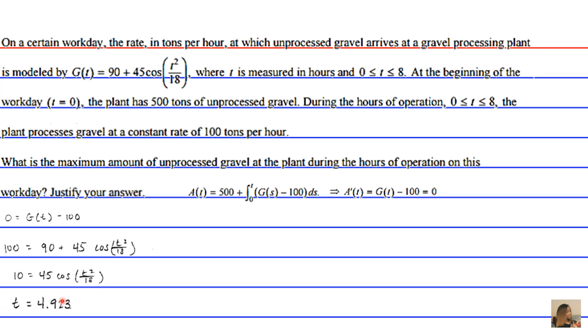So at t = 4.923, we potentially have a maximum or a minimum, because remember, critical points can be points of maximums or minimums. But let's just go ahead and test out our answer to see what it yields.